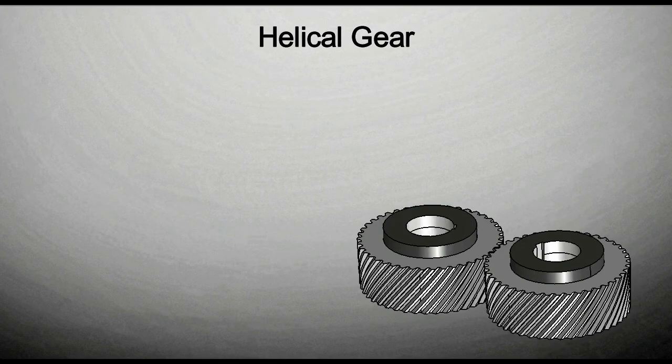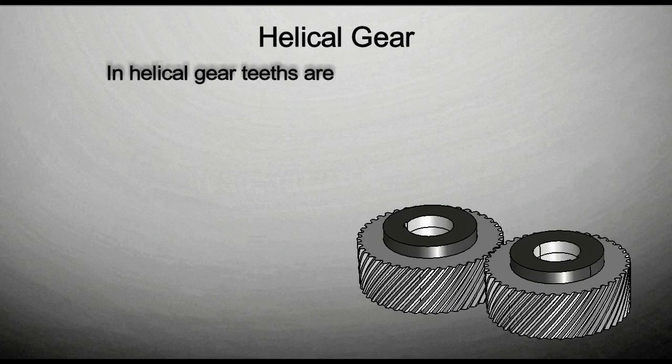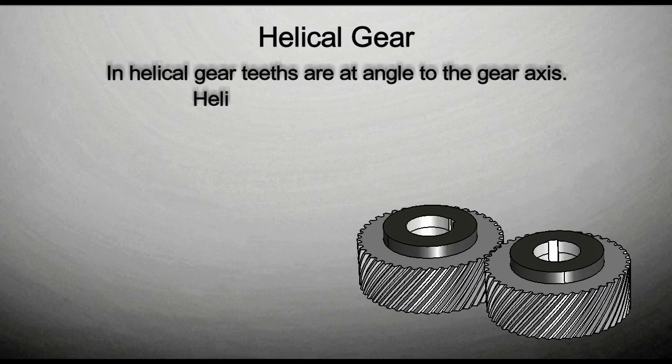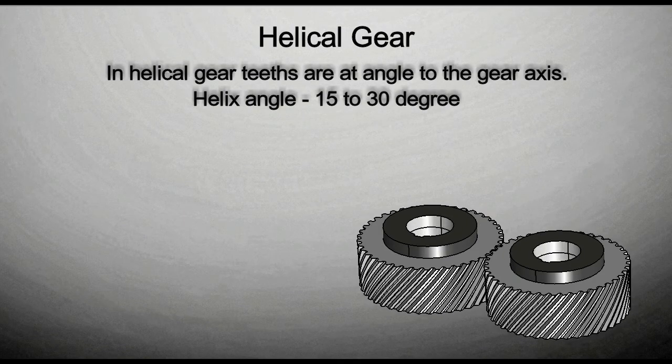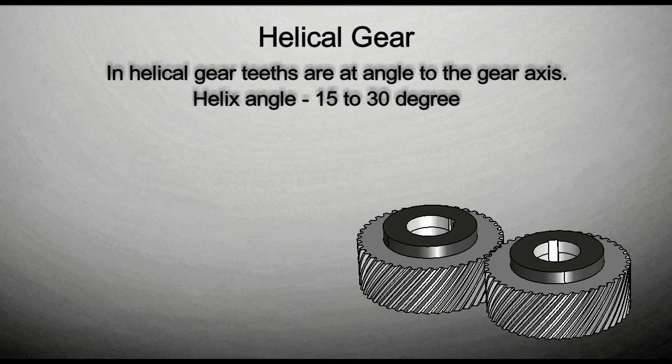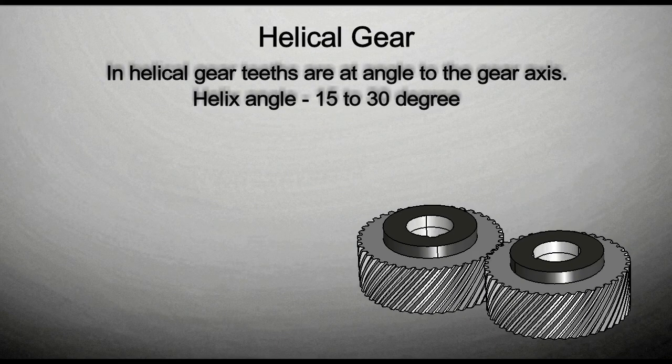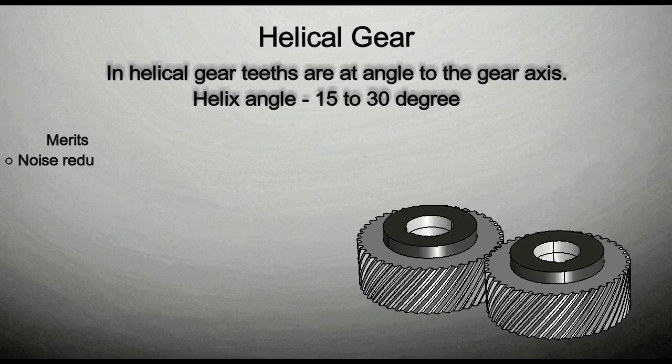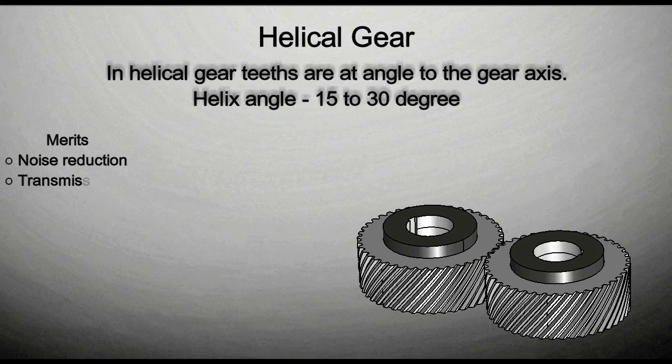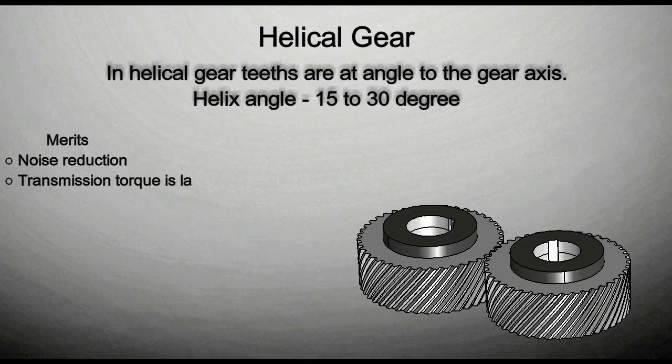Helical gear. In helical gear, teeth are at an angle to the gear axis. Helix angle ranges between 15 to 30 degrees. Helical gear operates more smoothly and quietly when compared to spur gear due to its interaction of teeth. Merits of helical gear are noise reduction, transmission torque is large as it has more surface contact.